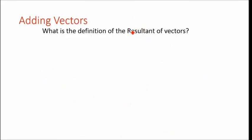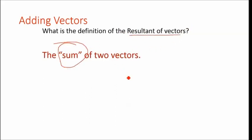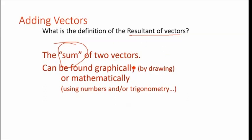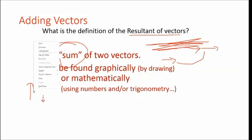The resultant of a vector is a fancy word for the sum of two vectors. You can do it graphically or mathematically. If I have an arrow and another little arrow, I can move this little arrow over to here, and we see this is the new sum, this big long one. We add these vectors by sticking the tail of one vector onto the head of the other vector.